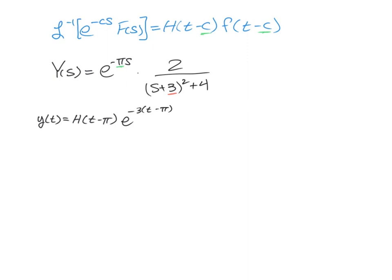So that is going to be the sine of, and again, it'd be normally 2t, but it's going to be two times (t minus π).